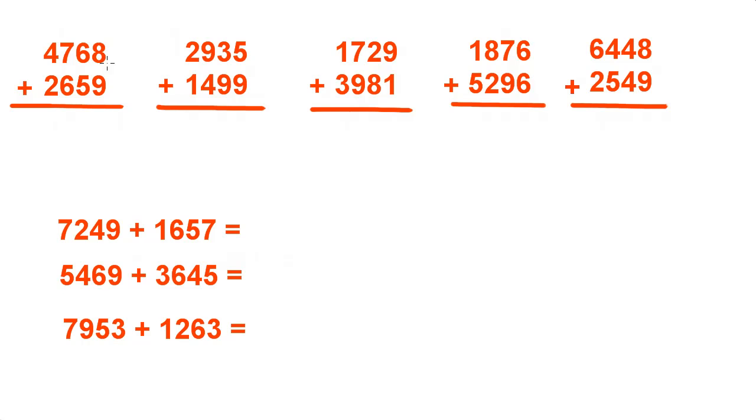We're adding big numbers like this. We start in the ones place. You add 8 plus 9. So 9 and 8 equals 17. You carry over the 1, bring down the 7.